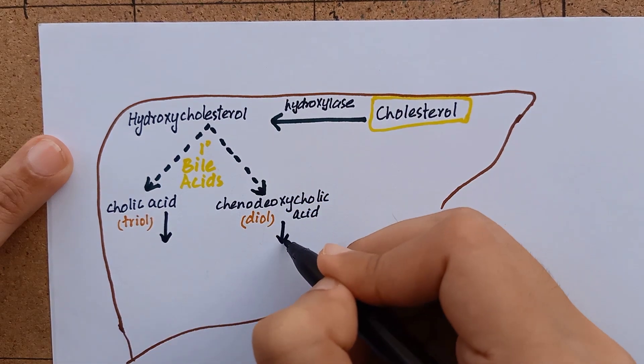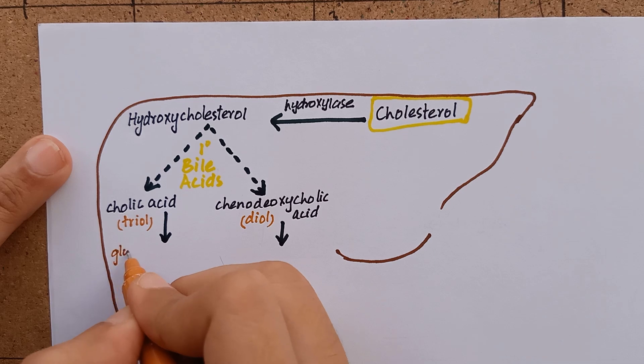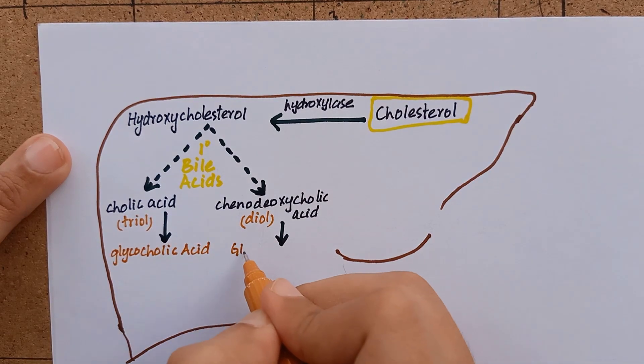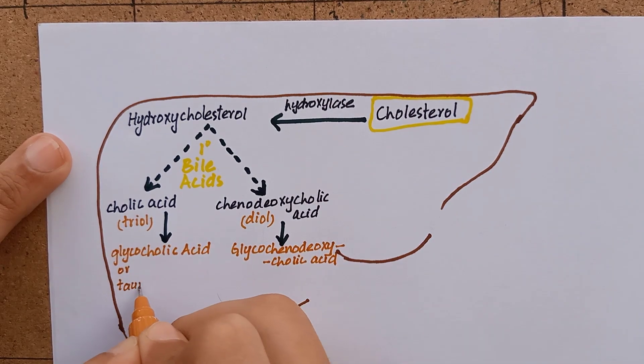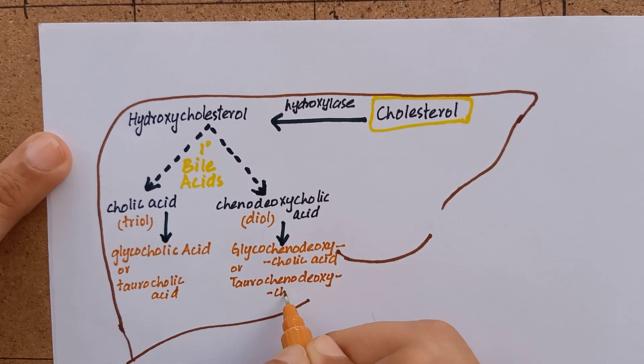In liver, cholic acid and chenodeoxycholic acid are conjugated with a molecule of either glycine or taurine, forming glycocholic acid and glycochenodeoxycholic acid in case of glycine, or taurocholic acid and taurochenodeoxycholic acid in case of taurine.